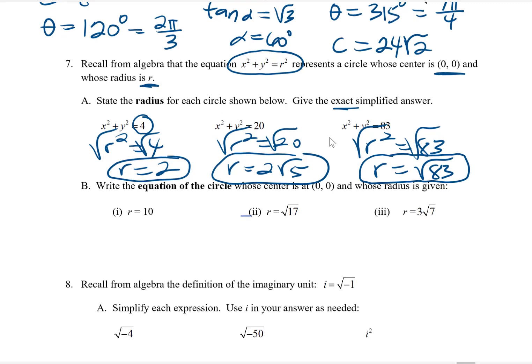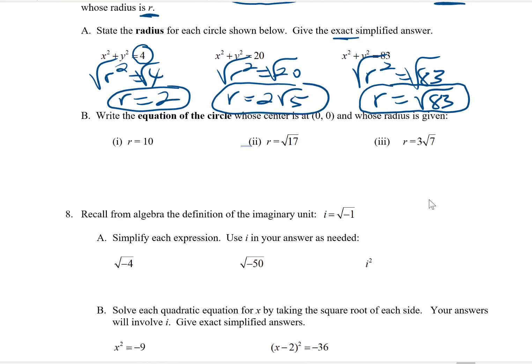Now, in part B, we want to go backwards. So we want to write the equation of the circle if we have the radius. Well, in the first one, if r is 10, then obviously the r² would be 100. So x² + y² = 100. In the second one, if r is the √17, I just have to square that for the equation. Squaring a square root just wipes it out. And so I would get x² + y² = 17.